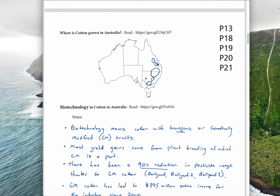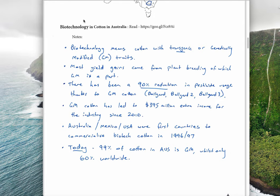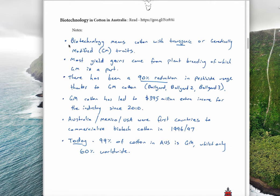This information here is really important. Biotechnology basically means cotton with a transgenic or genetically modified traits, so they're genes that have been brought in from other organisms. That's what transgenic means.